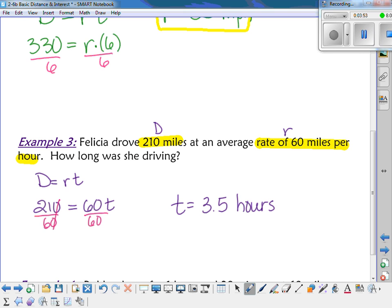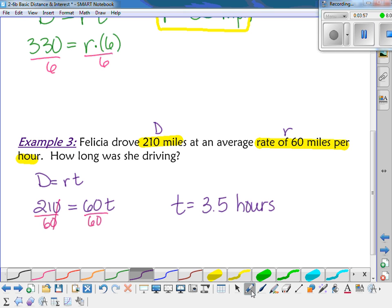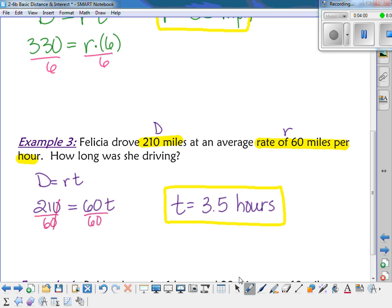So when you plugged it in, you should have plugged in 210 for the distance and 60 for the rate. So you get 210 equals 60 times T, and the opposite of multiplication is division, so we divide out the 60. You can cross out the zeros if that makes your division easier. And you end up getting that the time was 3.5 hours. If you divide 6 into 21, you should get 3.5. Any questions on that?